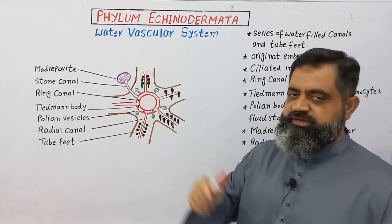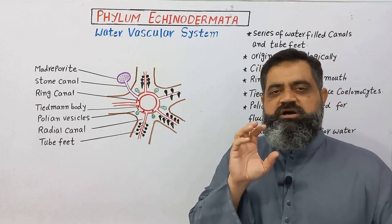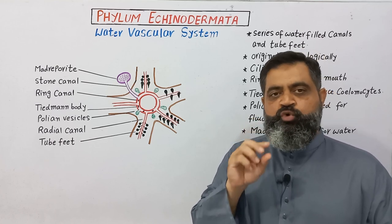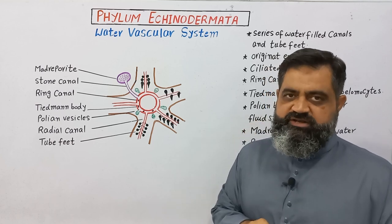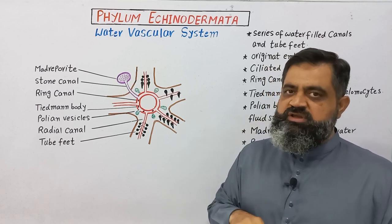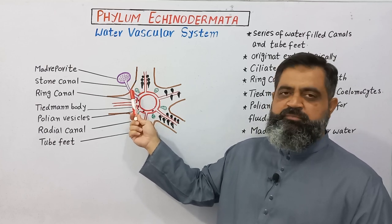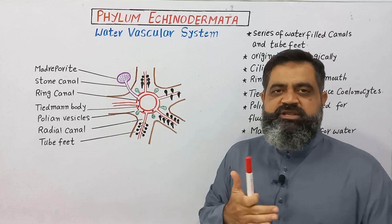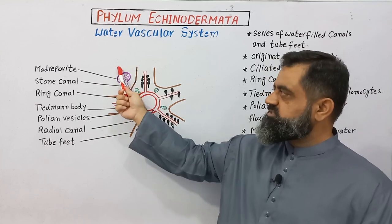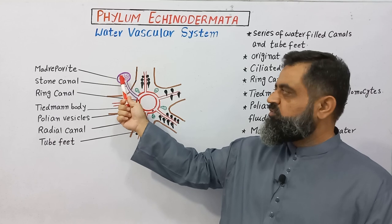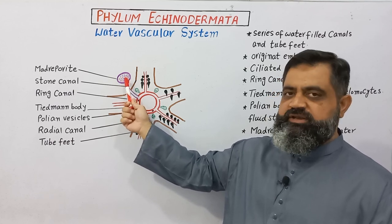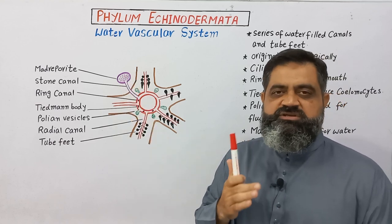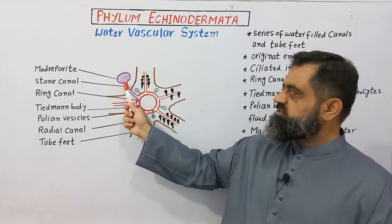Let's start with a small structure known as the madreporite. The madreporite is a sieve-like, disc-like or pore-like structure which has small openings in it for the inlet of water. It is attached to the dorsal surface of the body of the animal, but I have taken it out here to explain in detail. The madreporite is basically the inlet of water — water enters through the madreporite, where pores filter larger particles present in the water.